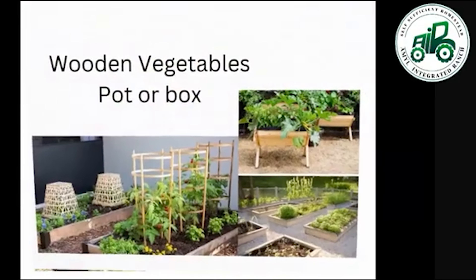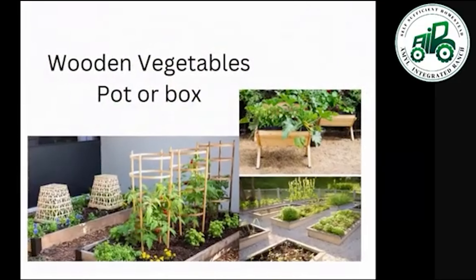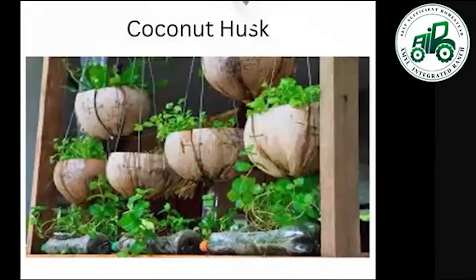Other recyclable containers include wooden vegetable pots or boxes, and coconut husks — instead of throwing or burning them, we can make use of them in the garden.